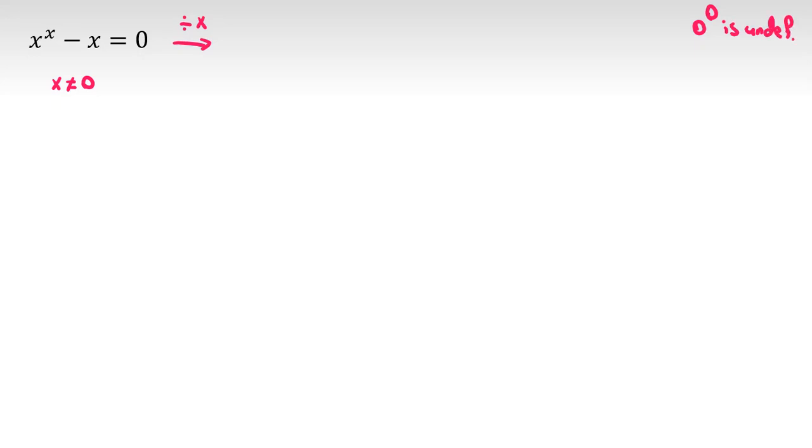Like for example, a number one over zero is undefined, and in calculator if you want to calculate zero to the power of zero you will get error. If you divide both sides by x it will be x to the x minus one minus one equal to zero.